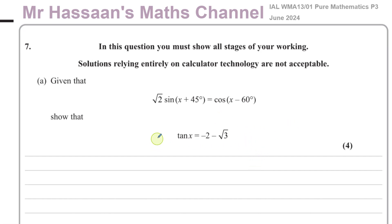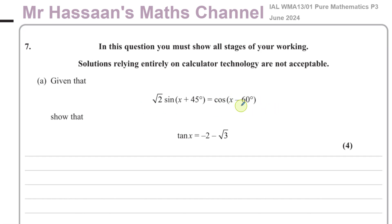We have to show that tan x is equal to negative 2 minus root 3, given that root 2 times sine of (x plus 45 degrees) equals cosine of (x minus 60 degrees). It seems apparent that we have to use the addition formulae in order to solve this problem.